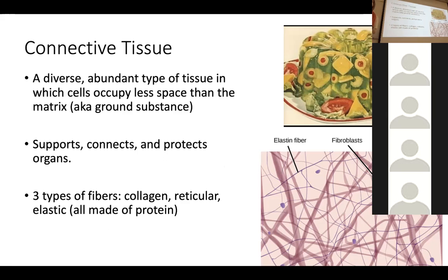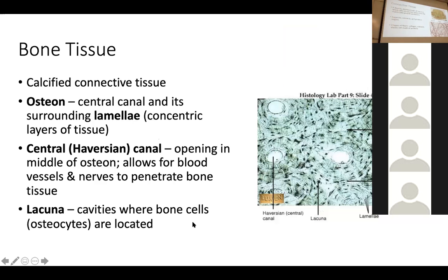Bone is a connective tissue — it seems like it should be its own thing, but it's a connective tissue. There are terms you need to be familiar with for bone tissue, and there's a whole chapter on bone tissue coming up. Bone tissue is a weird connective tissue because it's calcified — calcified means it has a lot of calcium and is hard. Obviously our bones are hard; it's not soft and squishy like other tissues. The bone tissue has a ton of calcium in it.